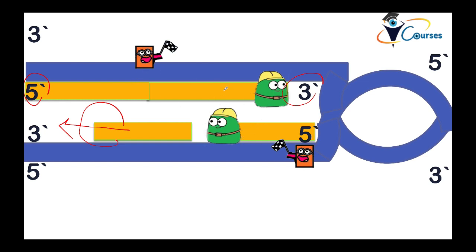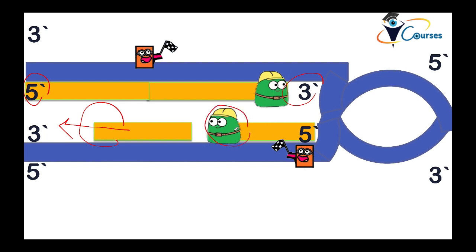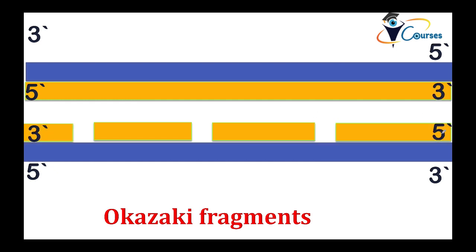Both DNA polymerases move from 5' to 3'. On one strand, the DNA polymerase builds pairs continuously, as the primase is always calling it in the 5' to 3' direction. On the other strand, the primase must repeatedly jump to the new 5' end as the DNA unwinds, resulting in gaps. So one strand is a continuous fragment while the other strand is discontinuous.